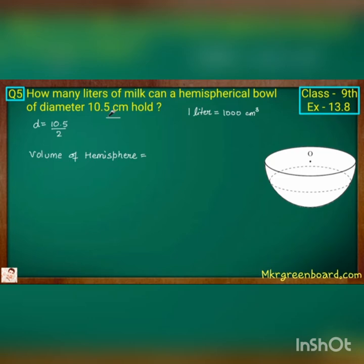So that hemisphere is half of a sphere. So in order to find volume of hemisphere, we have to write the formula for volume of hemisphere. And here diameter is given, so we have to find the radius and radius is half of diameter. And we have to find the value in liters and 1 liter is 1000 cm cube.